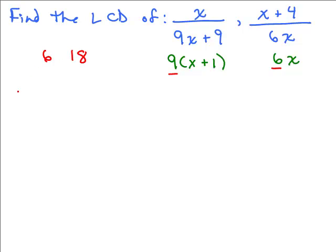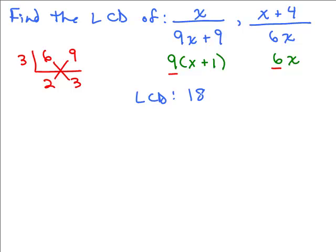I showed a little way where you put the two numbers with an upside-down division and think what number goes into both of them — it's 3. Three goes into 6 twice and into 9 three times, and then you cross-multiply: 6 times 3 is 18, or 9 times 2 is 18. So for the numerical part of the least common denominator, I'm going to get 18. The next factor is X plus 1, so I need to put that in there — and that takes care of the first denominator.